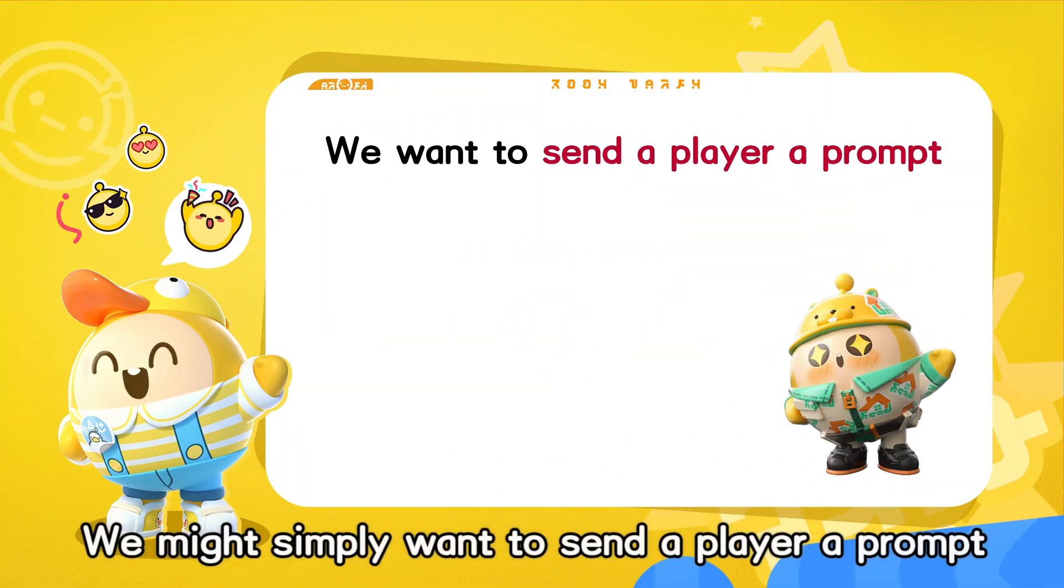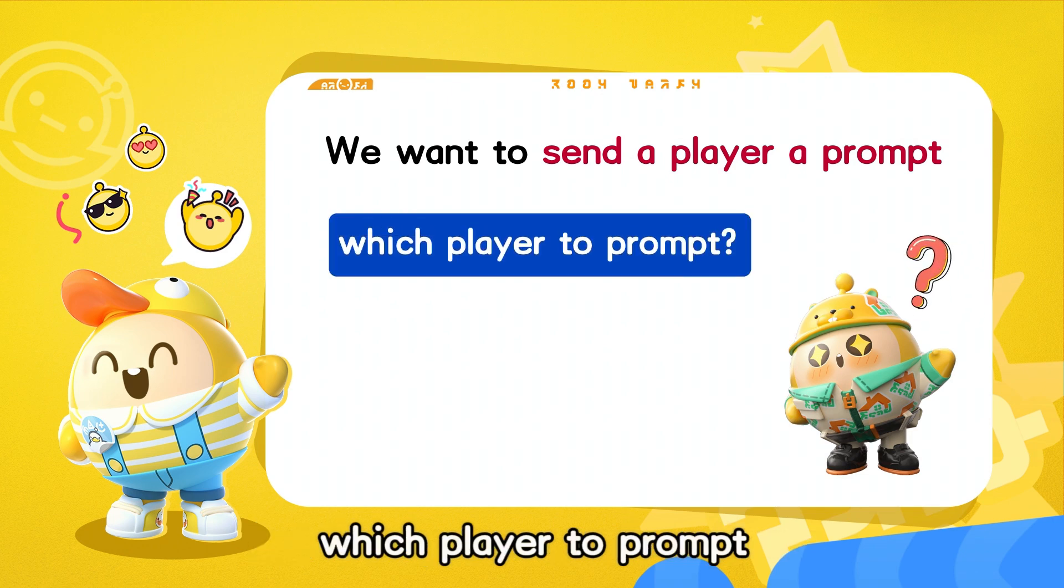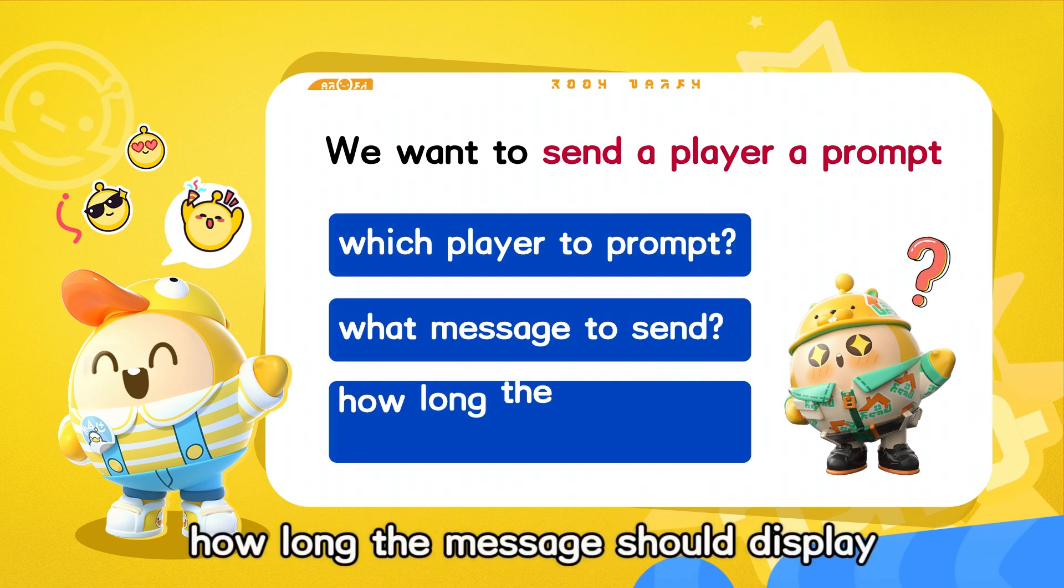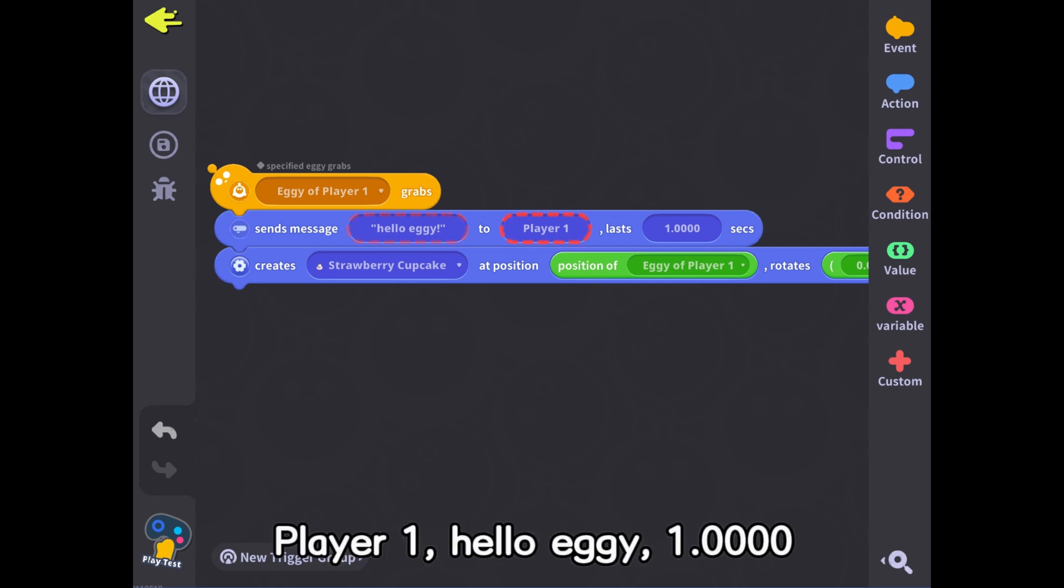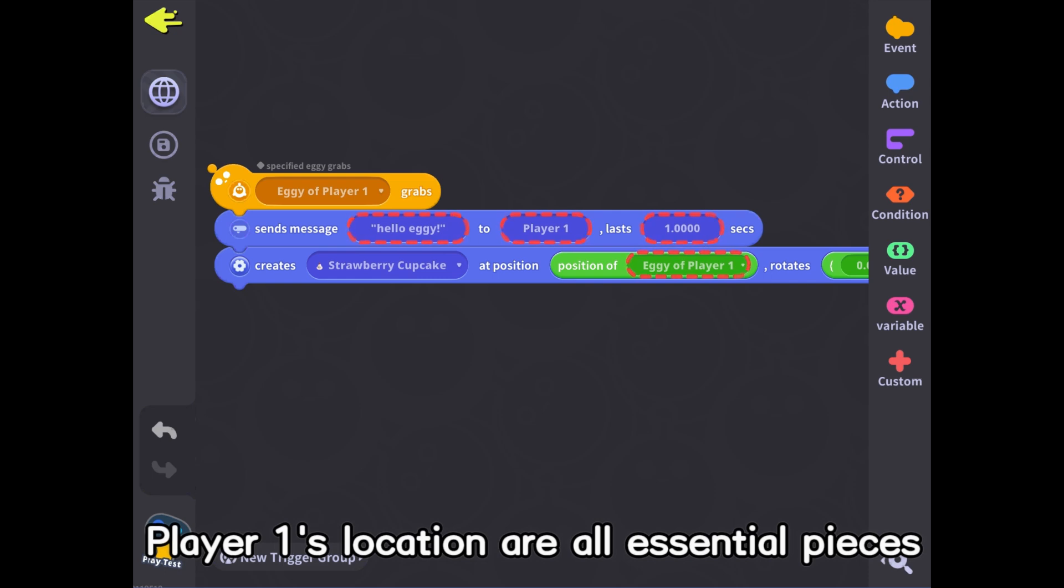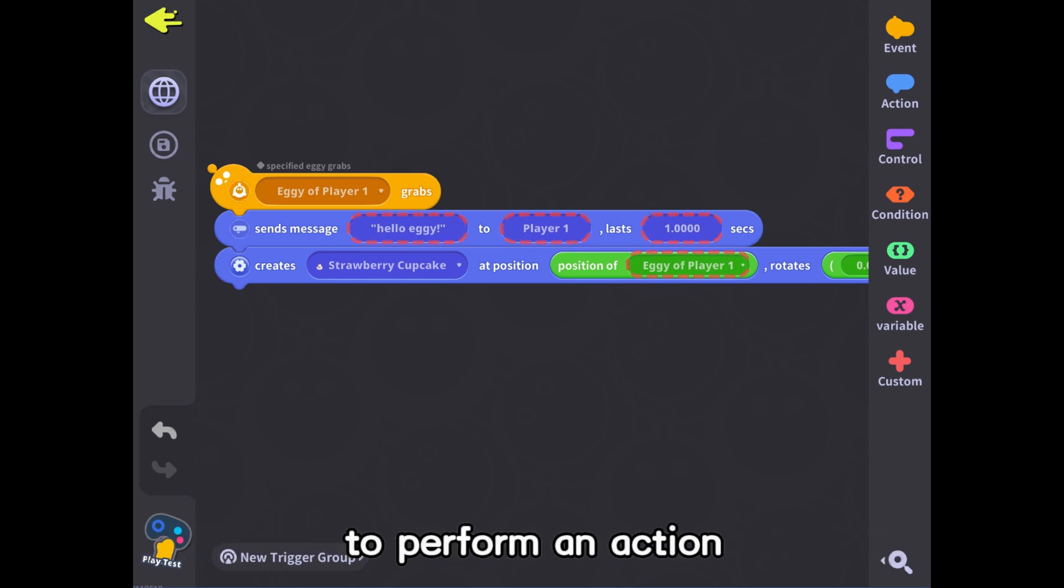We might simply want to send a player a prompt, but the system needs to know which player to prompt, what message to send, how long the message should display, and more. In the Eggie code here, Player 1, Hello Eggie, 1.0, and Player 1's location are all essential pieces of information required for the system to perform an action.